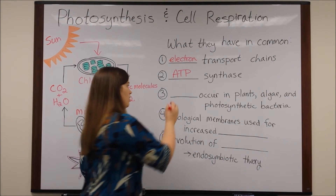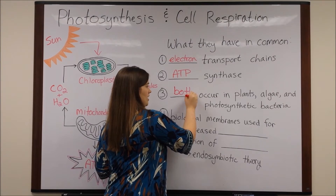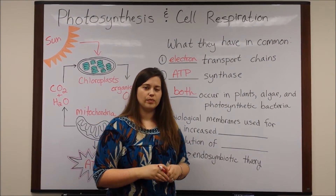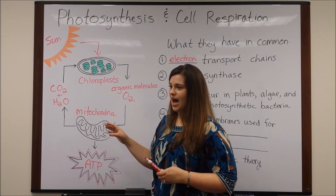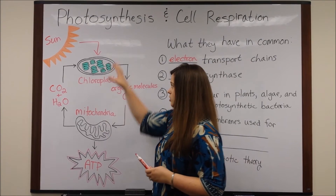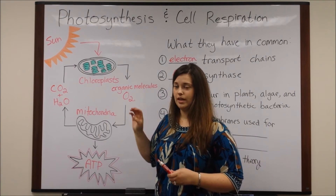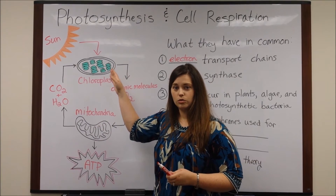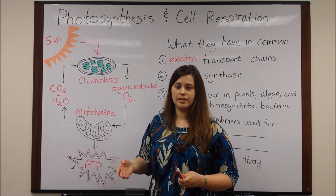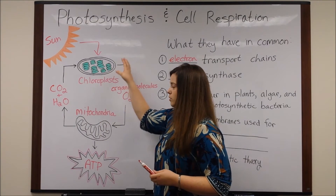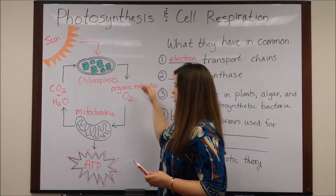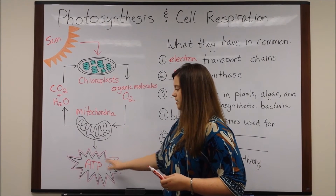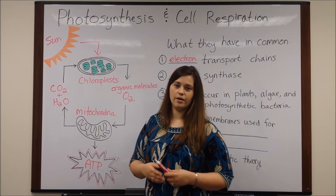Also, both photosynthesis and cell respiration occur in plants, algae, and photosynthetic bacteria. People are tempted to say that autotrophs, like plants, use photosynthesis, and heterotrophs, like animals, use cell respiration. That's true, but actually plants use both. And algae and photosynthetic bacteria, they use both. They use photosynthesis to generate the organic molecules and the oxygen, and they use the mitochondria that they have for cell respiration to get the ATP that they need for all of their various functions.